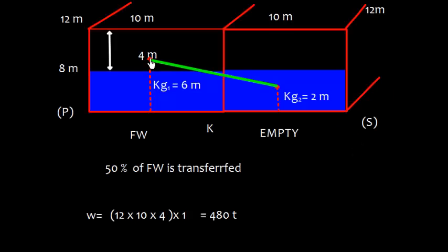This weight is transferred in vertical direction from G1 to G2. Weight is transferred like this and we are interested only in this vertical component, vertical shift which is KG1 minus KG2, that is 4 meter. So we need to find what is the shift of center of gravity.